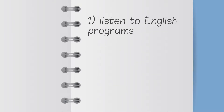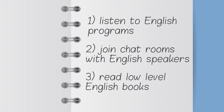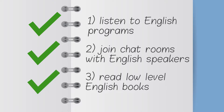So: one, listen to English programs; two, join chat rooms with English speakers; and three, read low-level English books. Do all three ideas explain how we can learn English easily? Yes. Are all three ideas tips for improvement? Yes. Are the three ideas all different from one another? Yes.